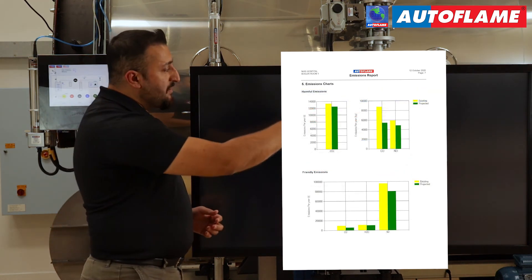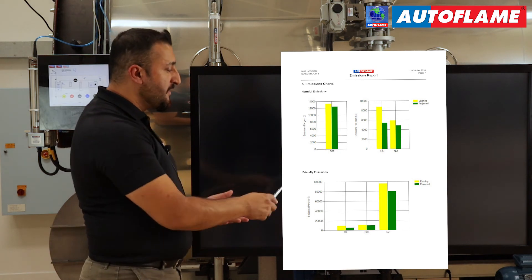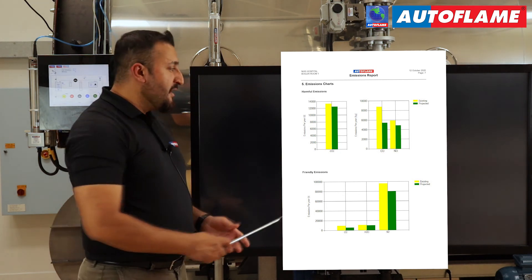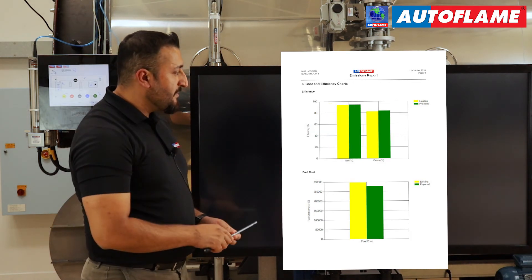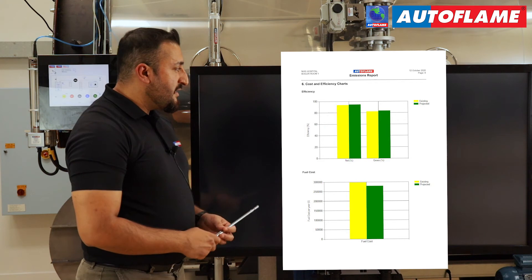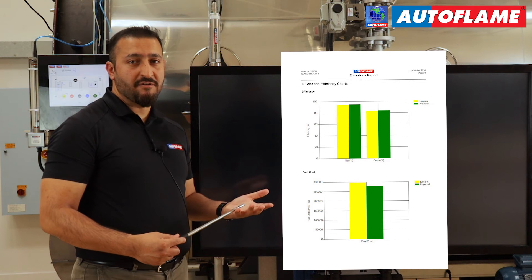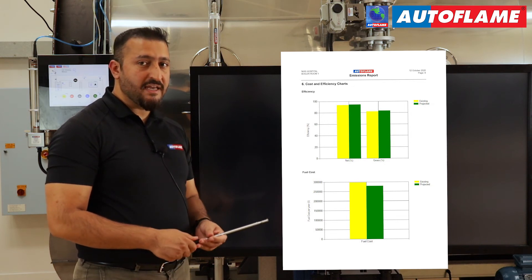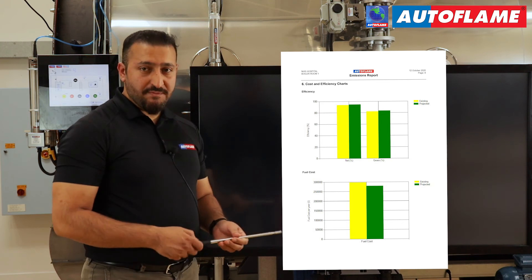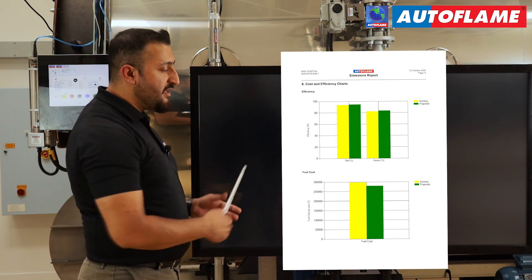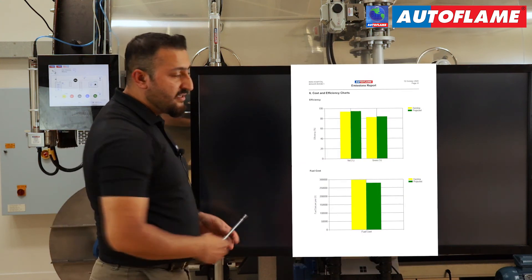The report also provides the emissions chart, which gives you two different sections - the harmful emissions and also the friendly emissions, the before and after the installed data. Cost and efficiency chart - your efficiency, how it is before the upgrade and after the retrofit has been carried out. Similar view for your fuel consumption - what was the cost before and now after the retrofit has been carried out, what will be the projected fuel costs.